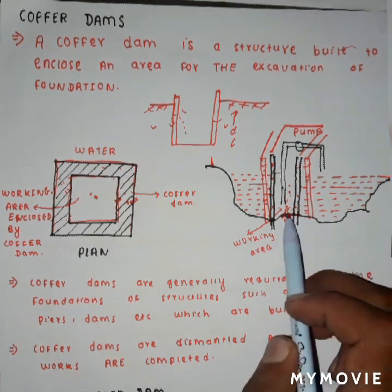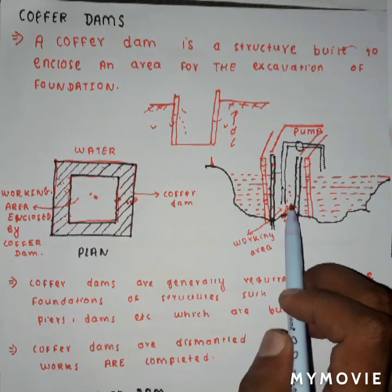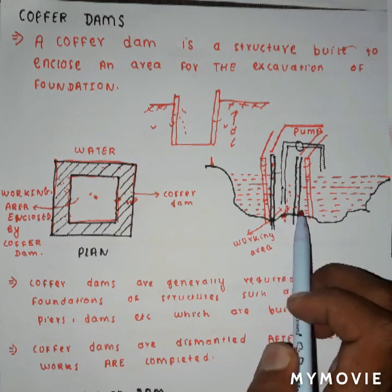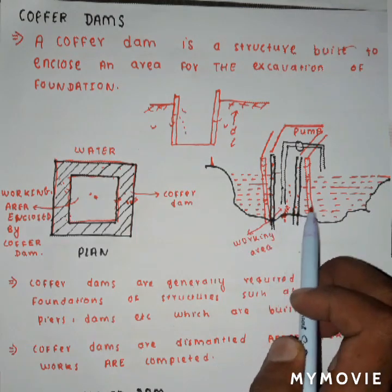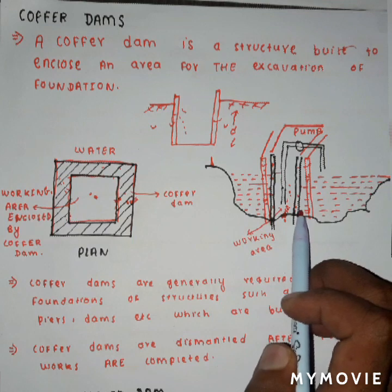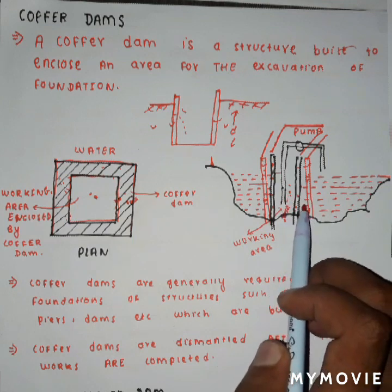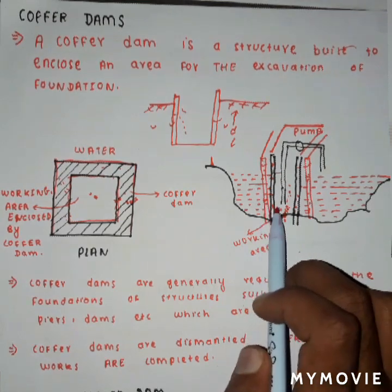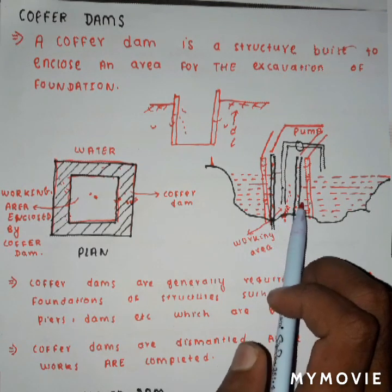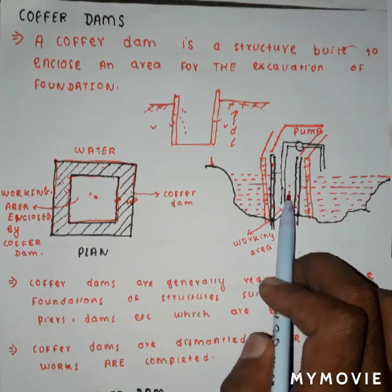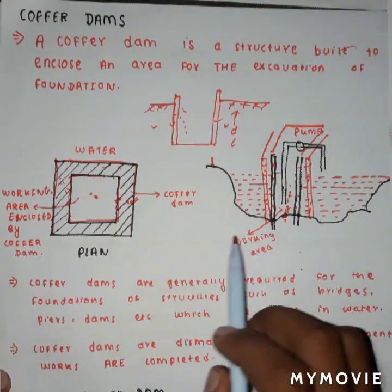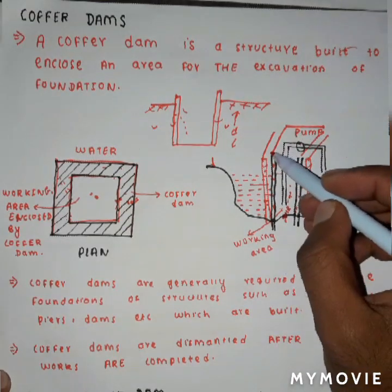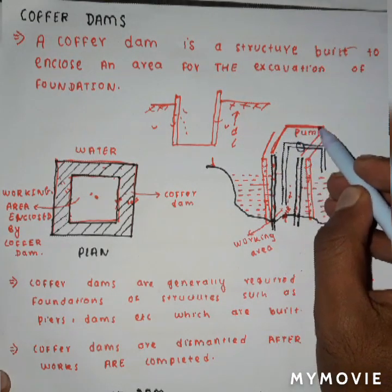For the construction of the bridge, suppose the piers need to be constructed in this zone. To create a dry condition here, a series of interlocked sheet piles are used. A double row of sheet piles is used in order to prevent water in the working area. After these sheet piles are driven into the ocean bed, the water from this portion is pumped out using a pump.